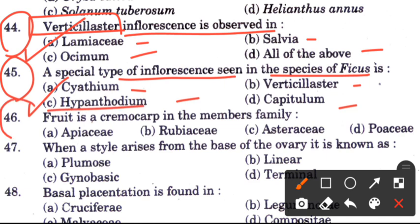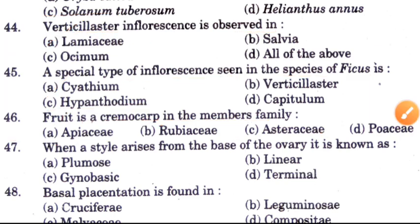Question 46: Fruit is cremocarp in the members of which family? Options are Apiaceae, Rubiaceae, Asteraceae, and Poaceae. The answer is A, Apiaceae — the fruit of the Apiaceae family is cremocarp.